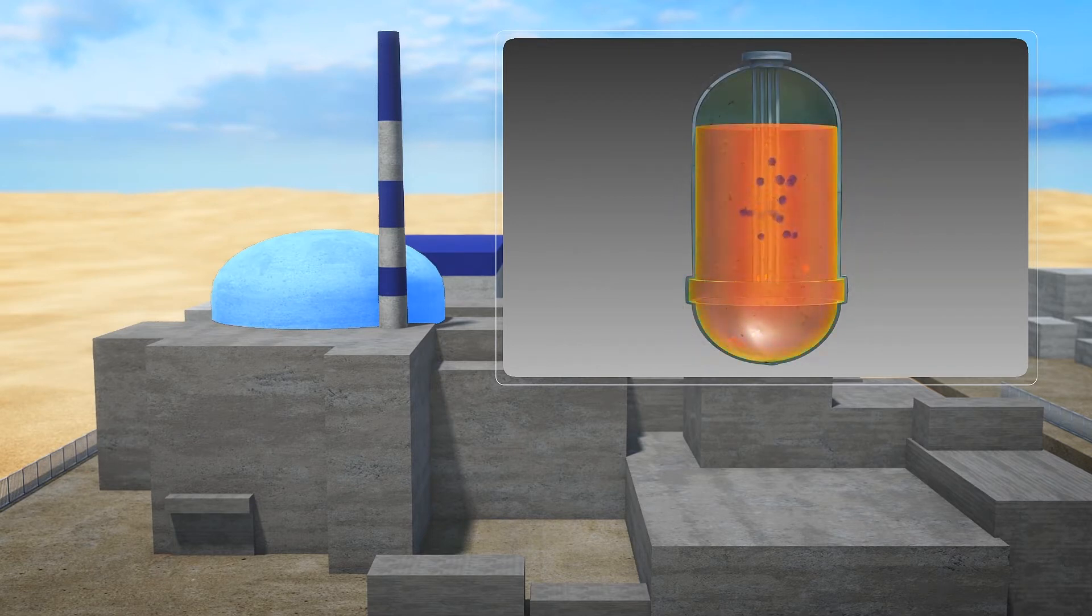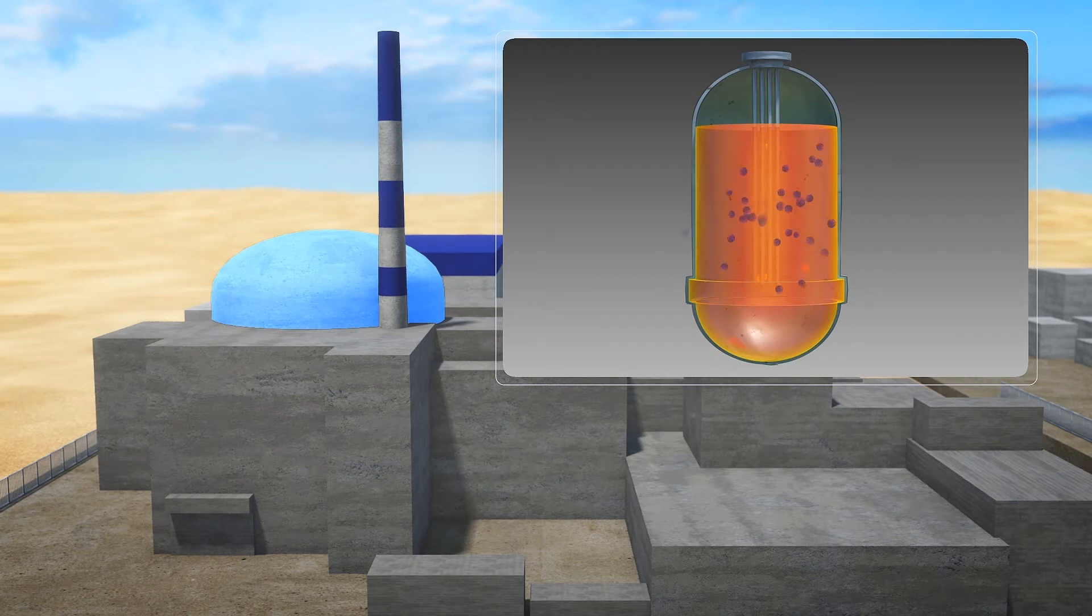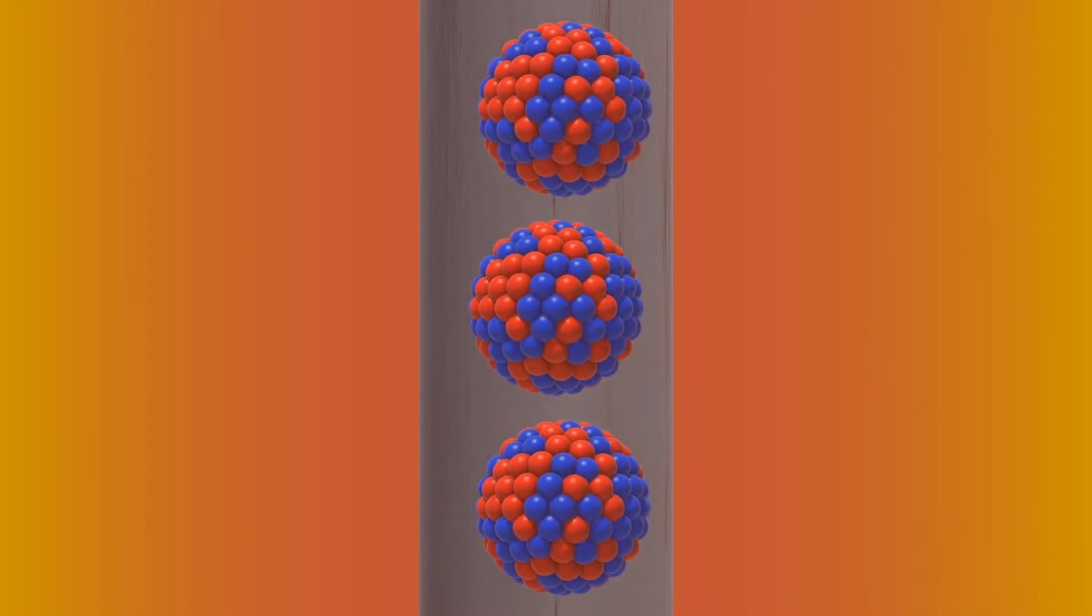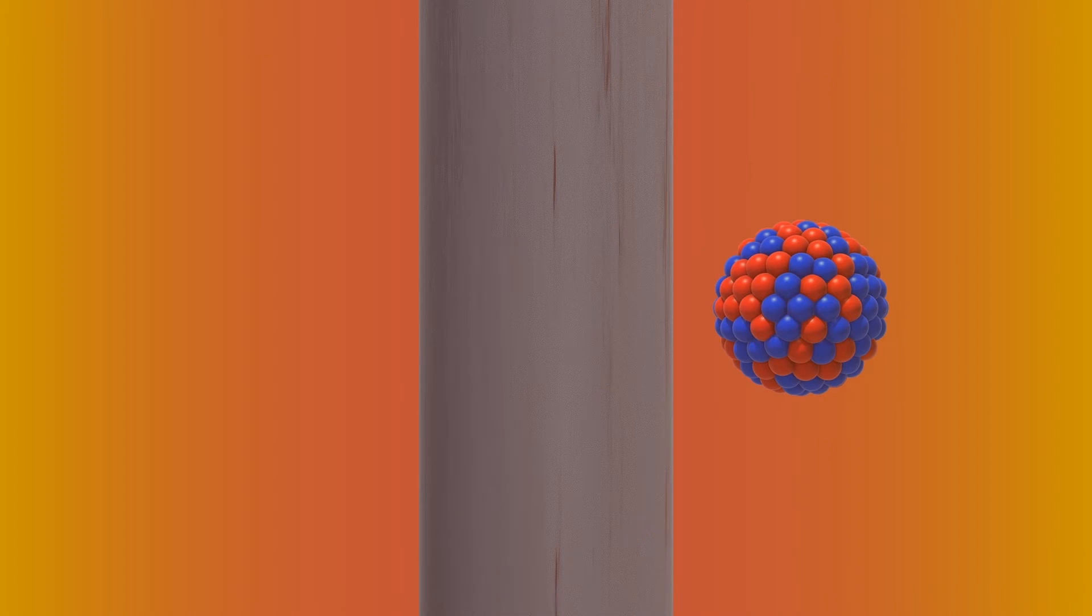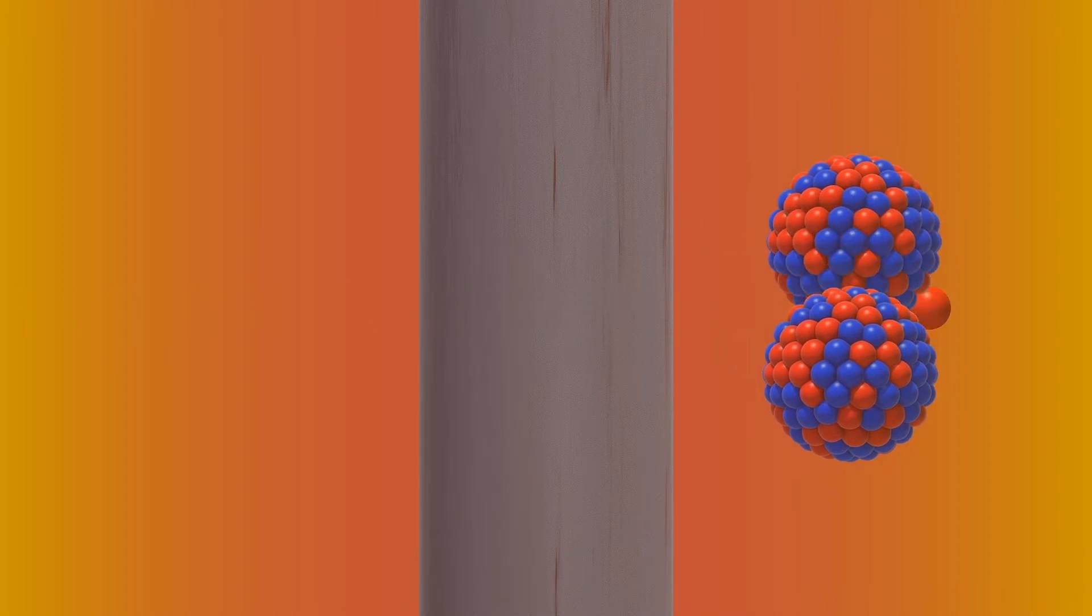Science journal Nature's website explains that these reactors may reduce the risk of explosive meltdowns because they operate at lower pressures. They also operate at higher temperatures, meaning they can produce electricity more efficiently, according to one nuclear engineer at the Massachusetts Institute of Technology.